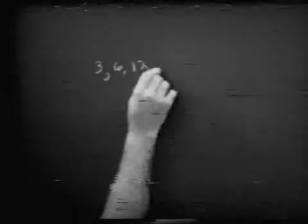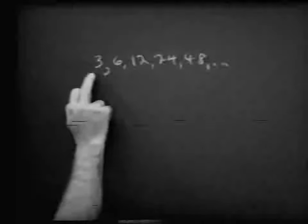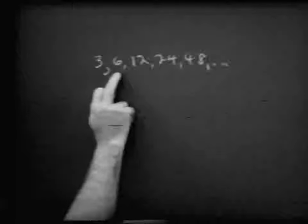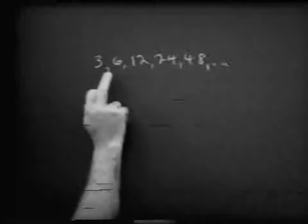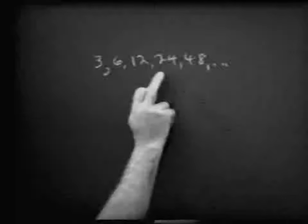Suppose we had a sequence such as 3, 6, 12, 24, 48, and so on. Looking at this sequence, this is a geometric sequence. We can check it: 3 times 2 is 6, 6 times 2 is 12, 12 times 2 is 24, 24 times 2 is 48. Sure enough, it's geometric.